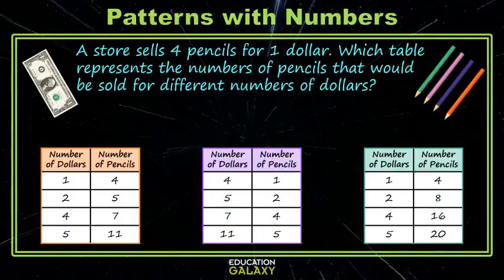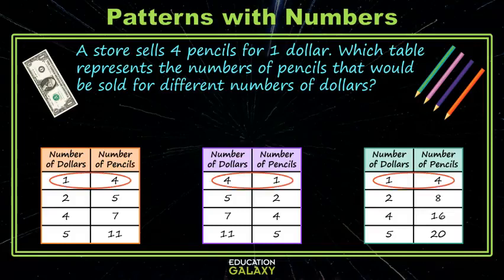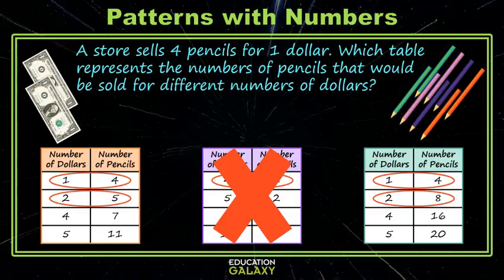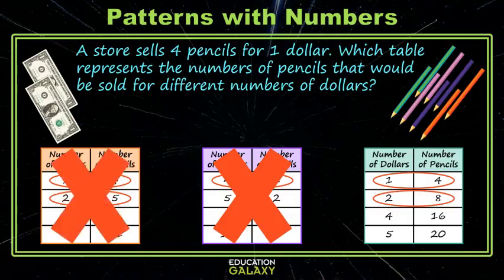Moving on. In this example, a store sells four pencils for one dollar, and we want to know which table represents the number of pencils for different numbers of dollars. Our correct table should have a one in the dollars column and a four in the pencils column for the same row. Two of them match that description, but one doesn't, so that one's out. Now, if I have two dollars, four pencils for one dollar means eight pencils for two dollars, not five. So there you have it.